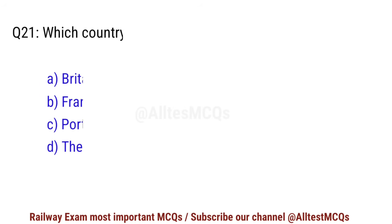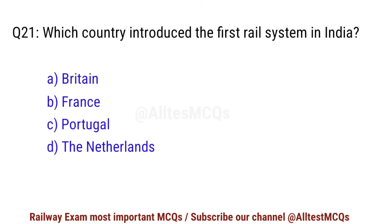Q21. Which country introduced the first rail system in India? Right option is A. Britain.